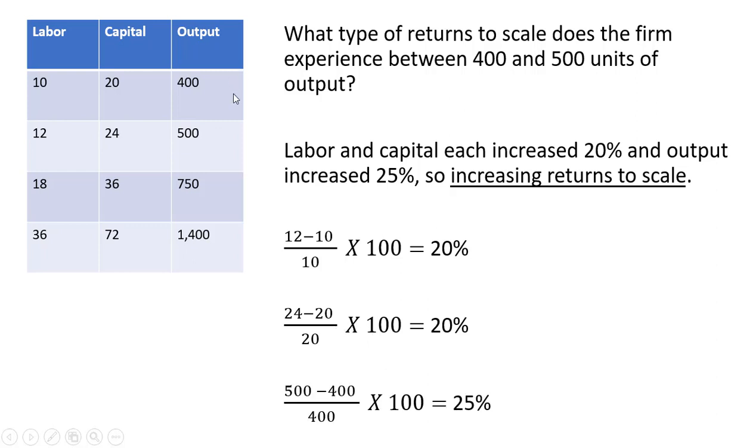And in terms of output, going from 400 to 500 units of output, that is a 25% increase in output. So this is consistent with increasing returns to scale.